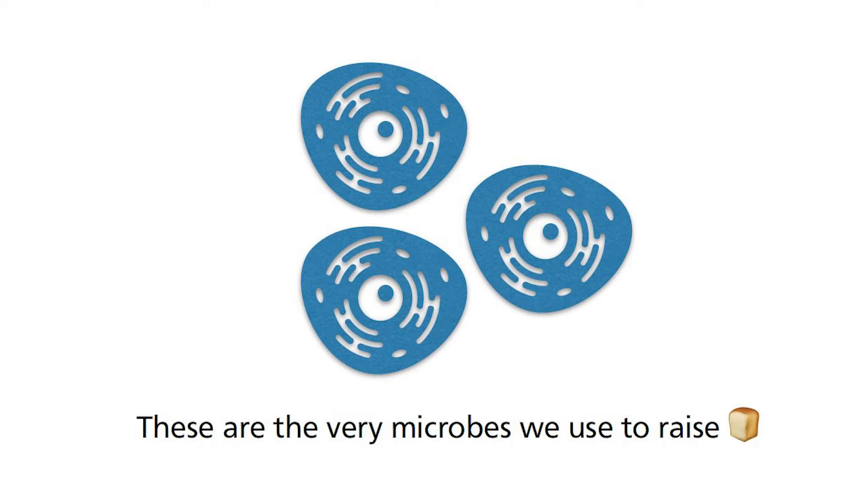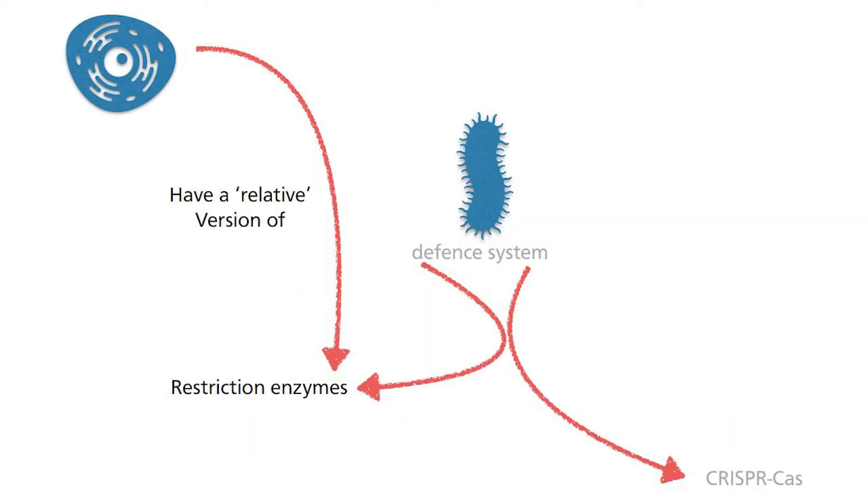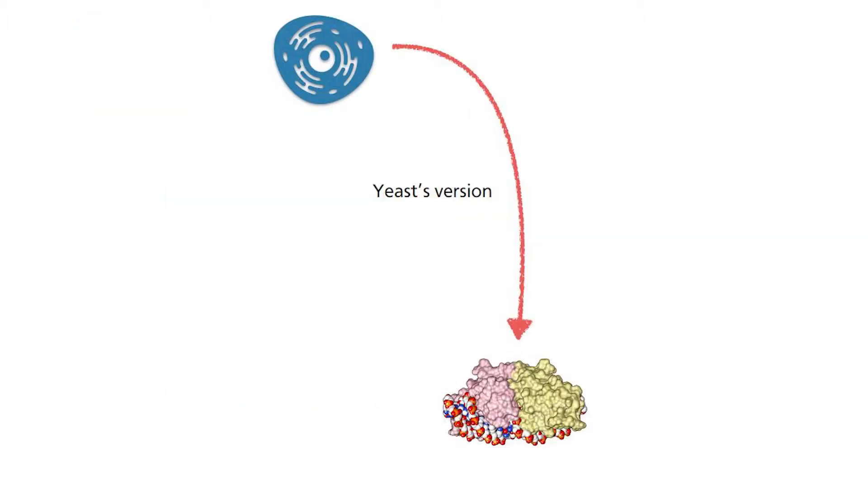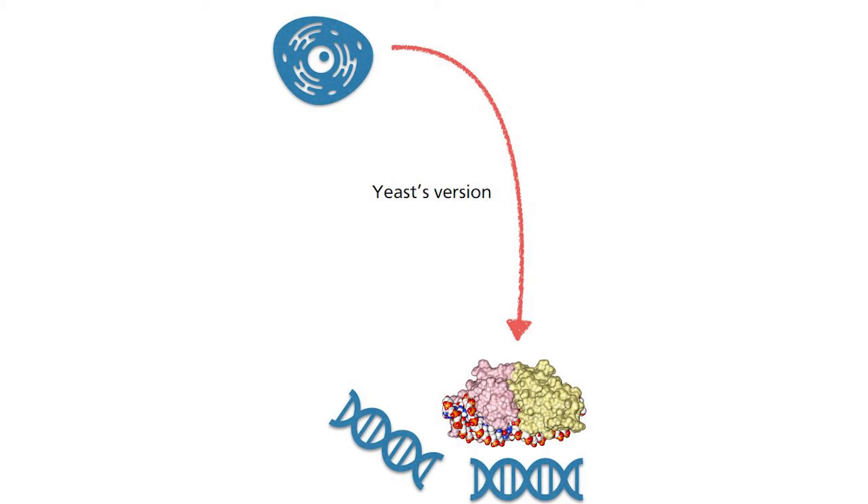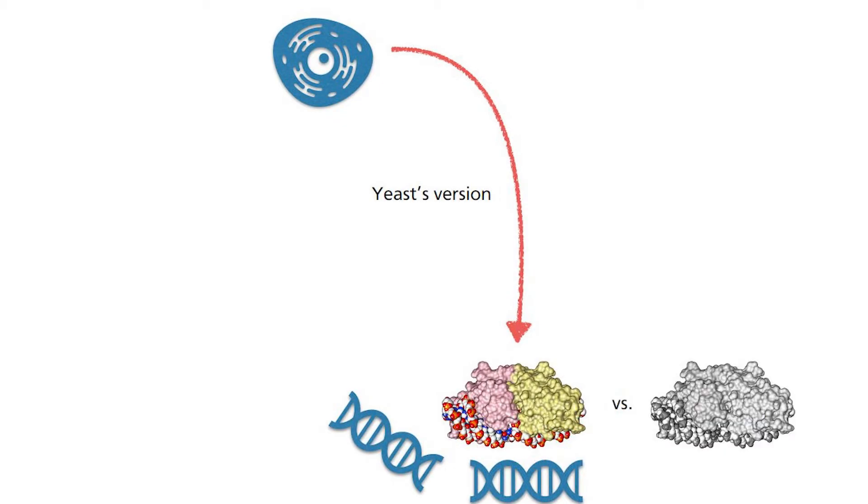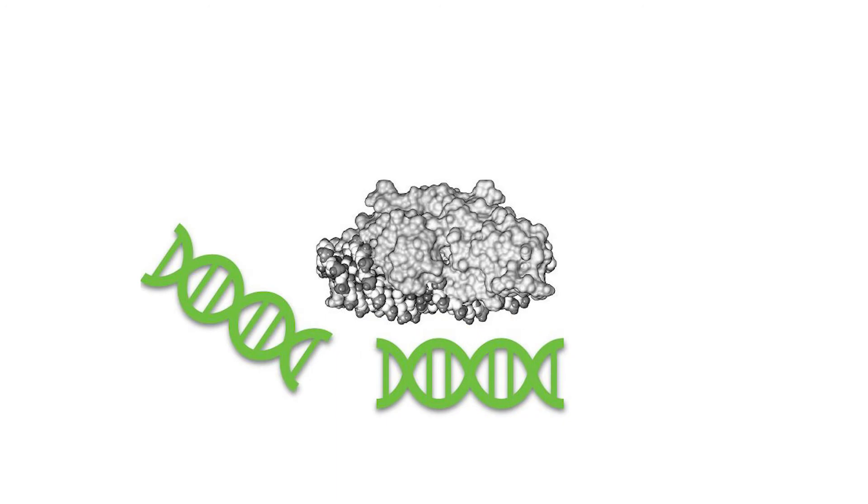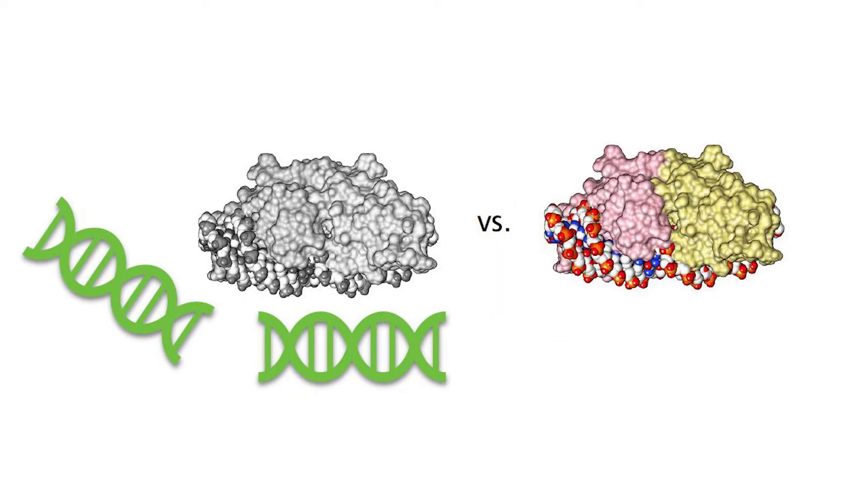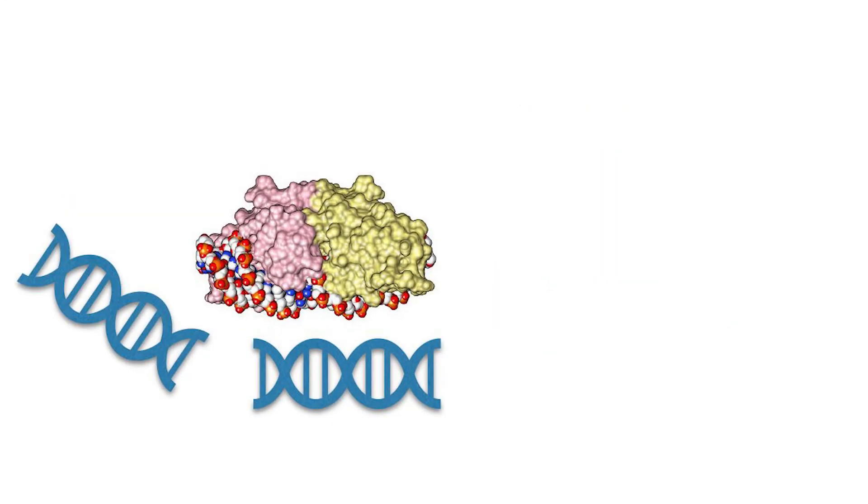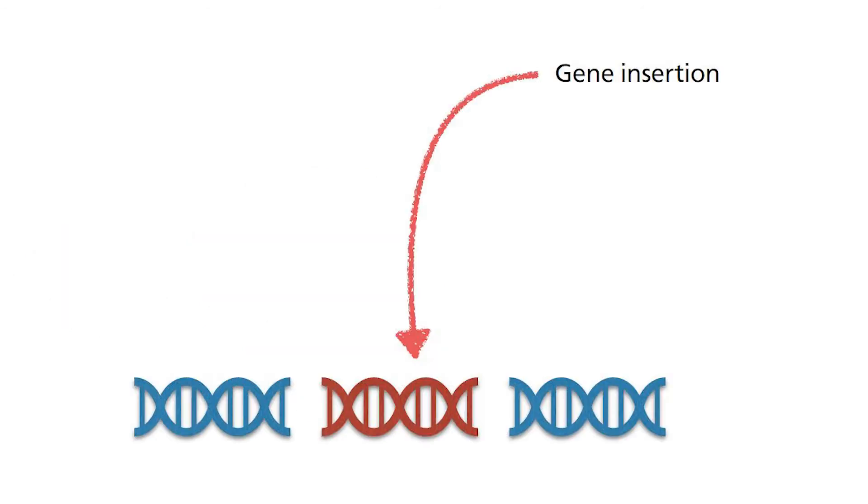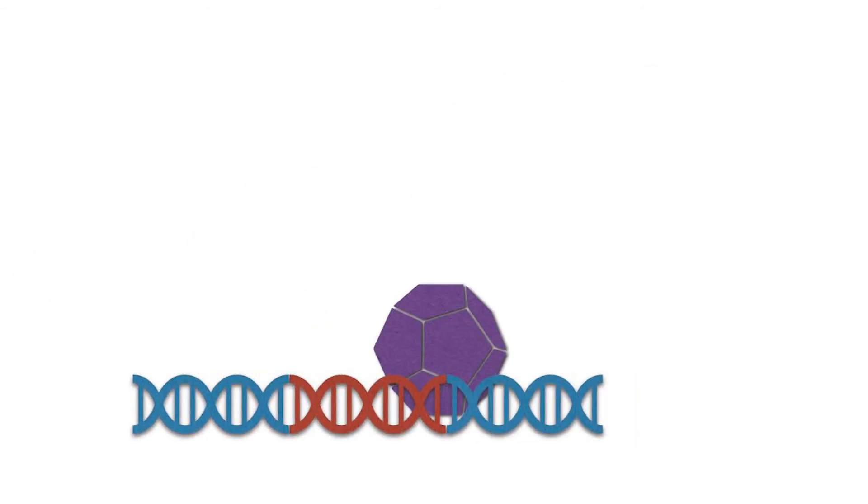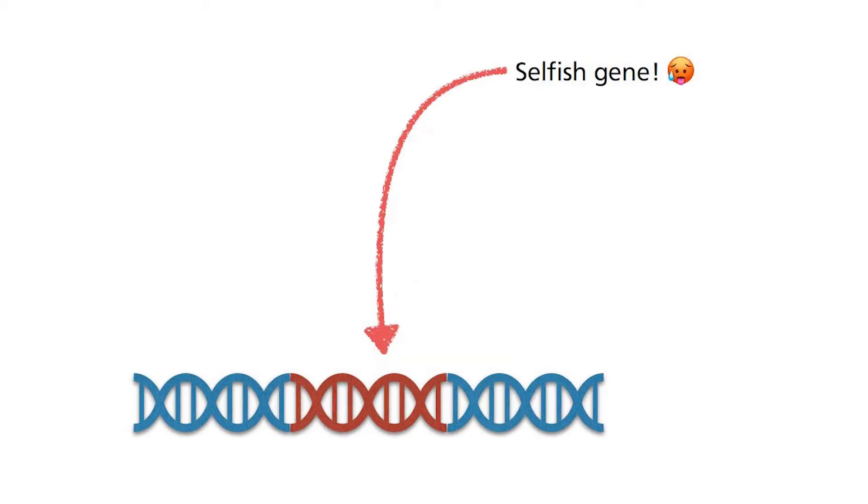Yeasts were first found to have a relative version of the bacterial restriction enzyme. Like the bacteria's version, it has the ability to cut DNA, but the function is completely different. Instead of using the enzyme to degrade viral genetic material, this eukaryotic enzyme has the ability to cut specific sites on the genome and cause a repair mechanism to insert its gene into the cut site.